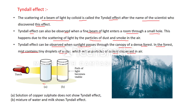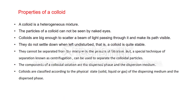Now see this diagram. The torch is the source of light. In one container we have taken a solution of copper sulfate, which is a true solution, and in the other we have taken a mixture of water and milk, which acts as a colloid. When the beam of light passes through the copper sulfate solution, no path is visible, but in the milk mixture the path is visible.